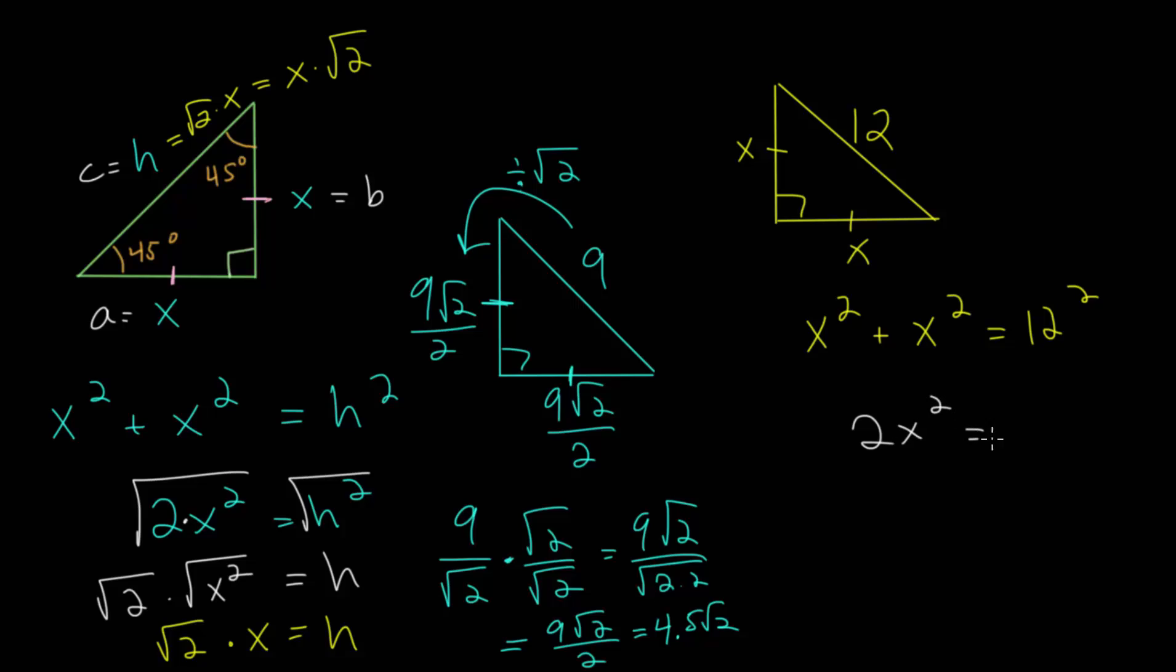So this would be 2x squared. This would be 144. We could divide each side by 2. And half of 144 would be 72. And taking the square root of each side, we would have root 72, which, by the way, is twice 36. And I write it like this because we can actually take the square root of 36. So this is root 2 times root 36, or 6 times the square root of 2, since the square root of 36 is 6.